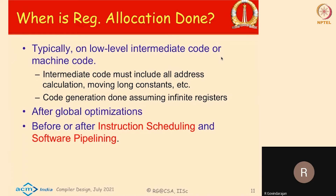Register allocation could be done either before or after instruction scheduling. Register allocation and instruction scheduling interfere with each other. People talk about pre-pass scheduling, where instruction scheduling is done first and register allocation later; post-pass scheduling, where register allocation is done first and instruction scheduling later; and hybrid allocation, where both are done together in some sense.